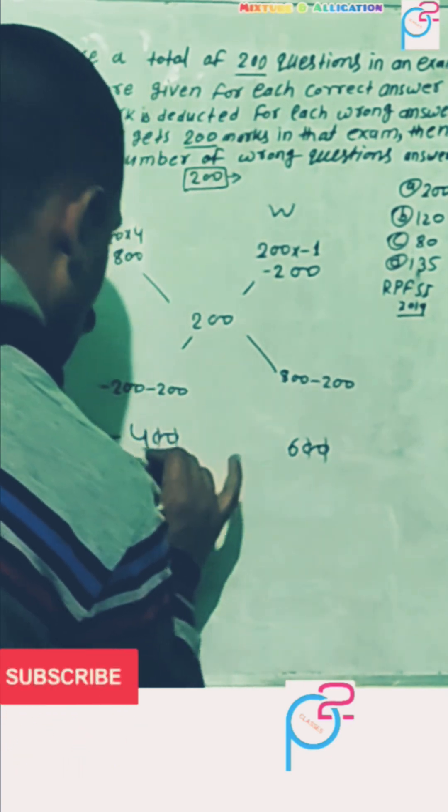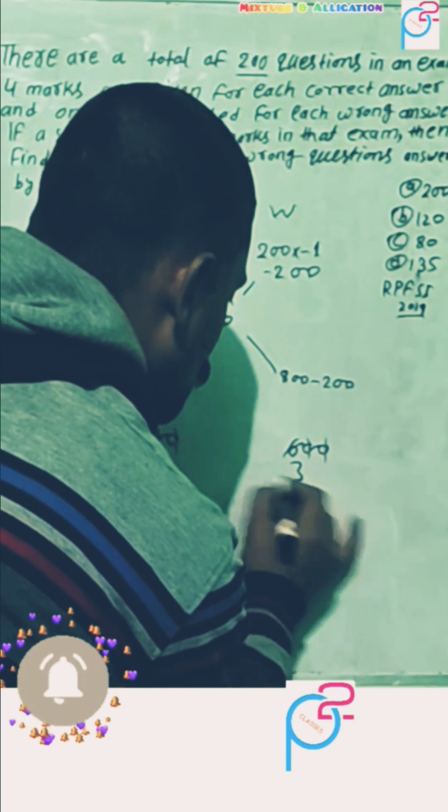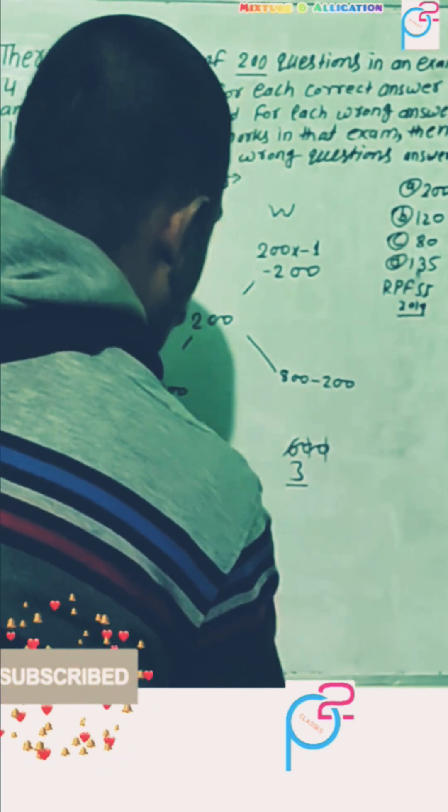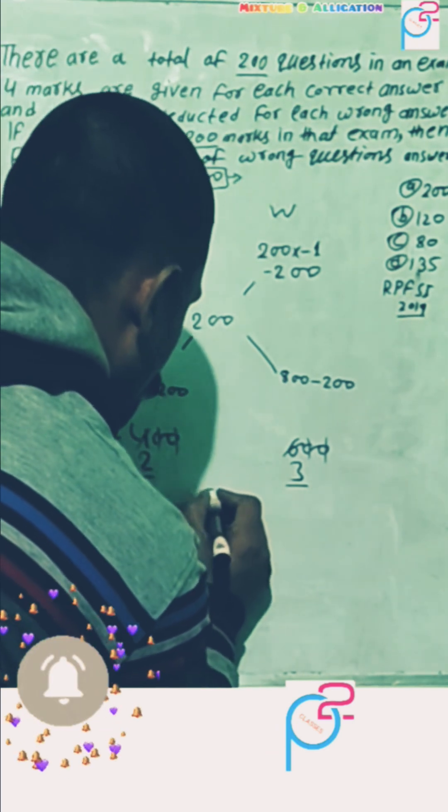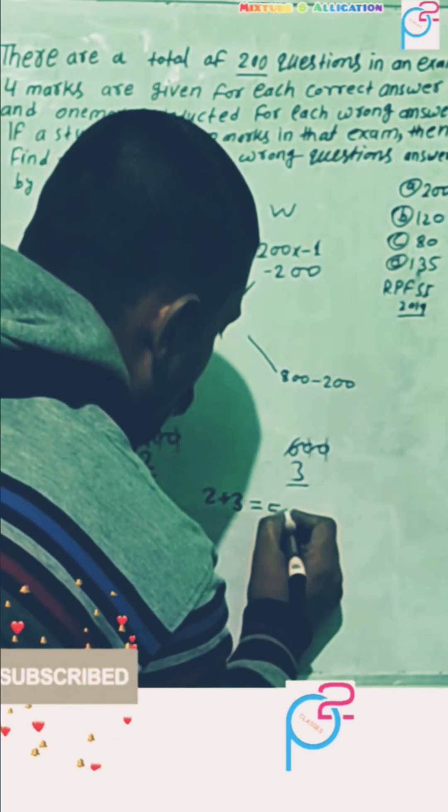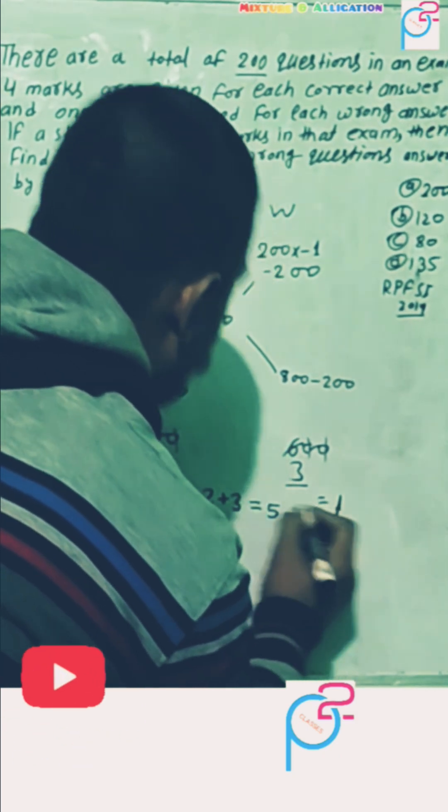Cancel out each other. 2, 2 are 4, and 2, 3 are 6. Means here 2 and here 3. Okay, if you want to add this, 2 plus 3 equal to 5. Means 5 unit equal to how many number of question? Total 200.